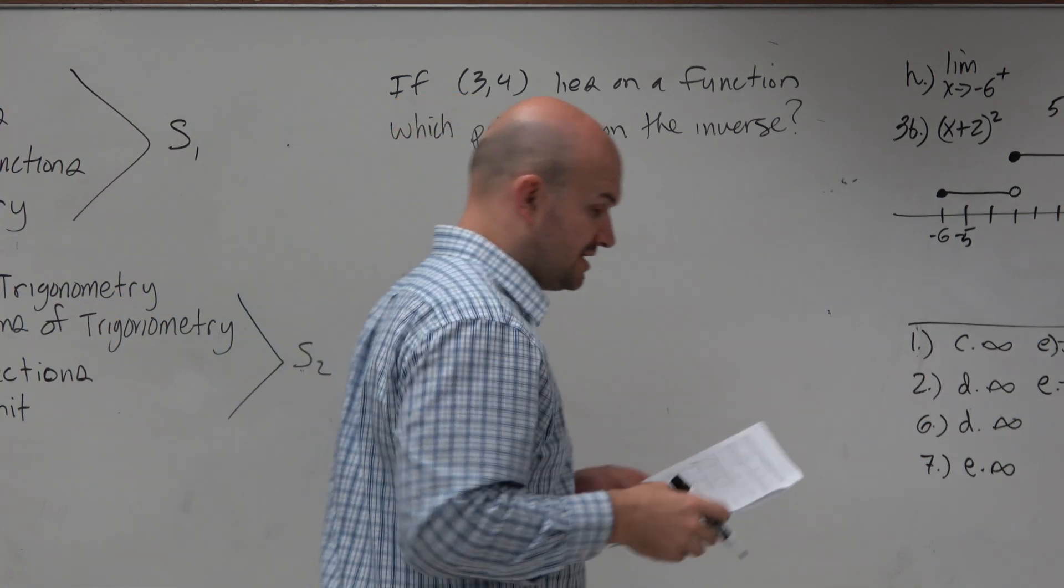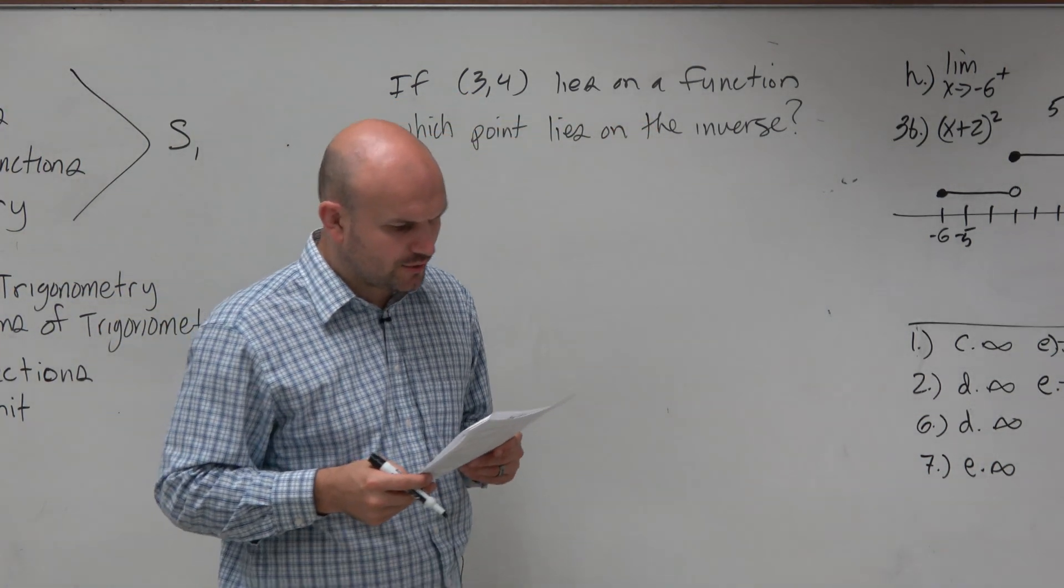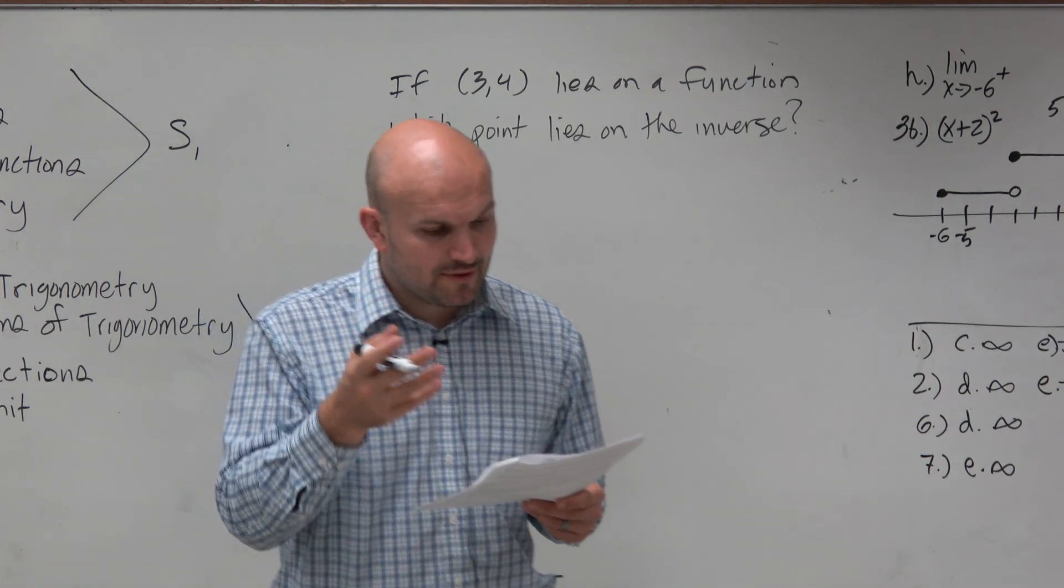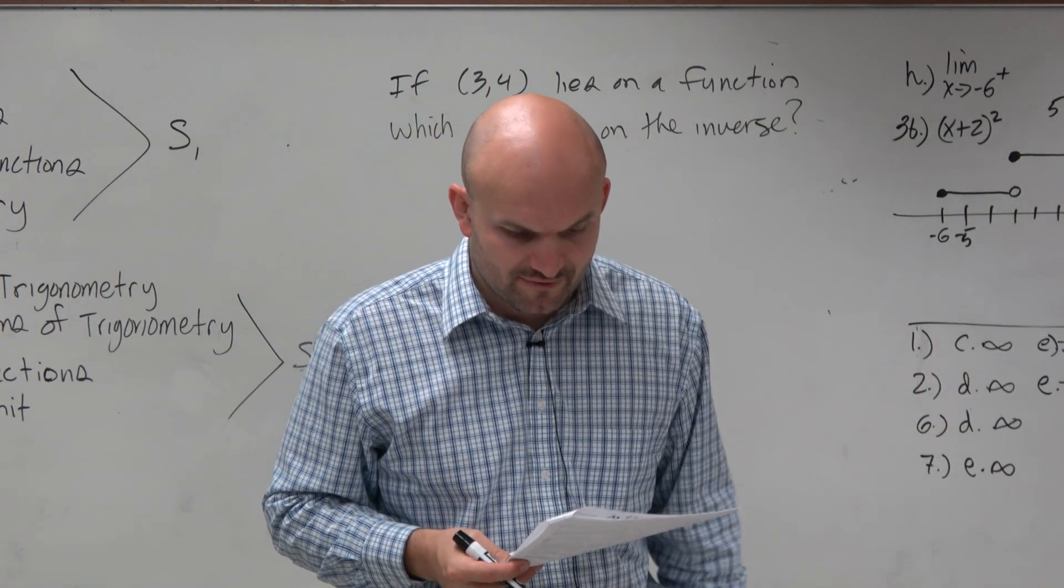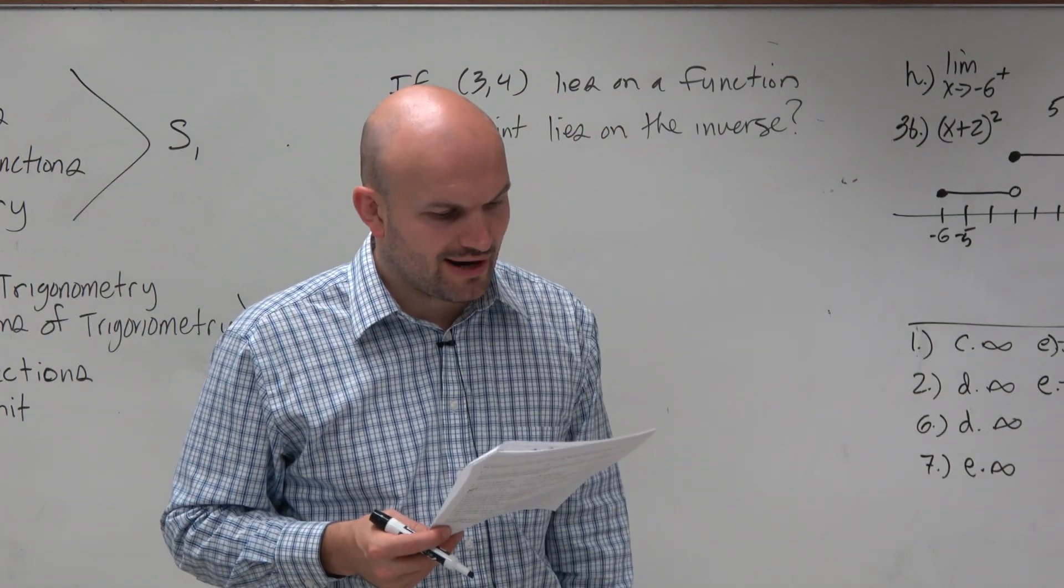All right. I didn't hear you, but I'll answer that question in a second. So let's look at question number nine. Question number nine says, if the point (3,4) lies on the graph of an invertible function f, then which of the following points lies on the graph of its inverse?